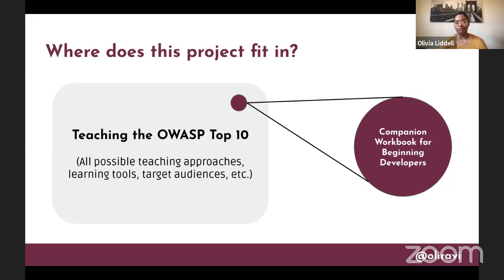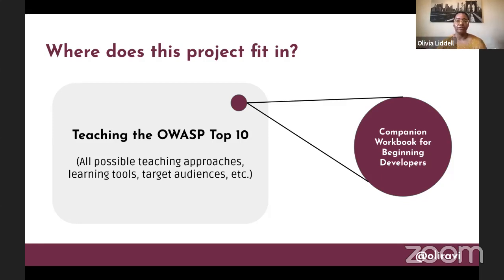I wanted to show this graphic to give you a sense of where this project fits into the much larger picture of learning about the OWASP Top 10. I'm sure many of you have come to learn about the Top 10 through any number of different methods — perhaps you went to a meetup, or read through the documentation on your own. That little purple bubble in the gray box is where this workbook fits in — not for every single learning need, but specifically available as a tool for people who could benefit from a learning approach that takes things a bit more slowly.